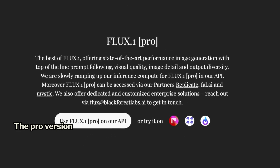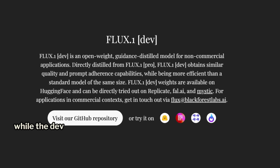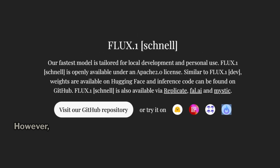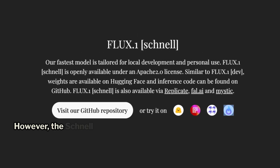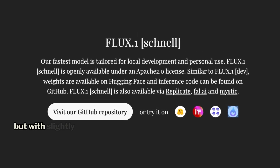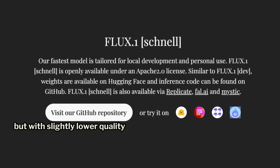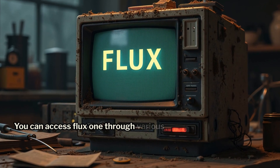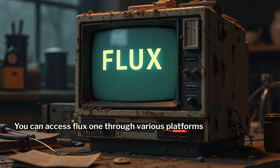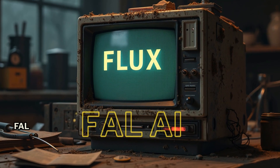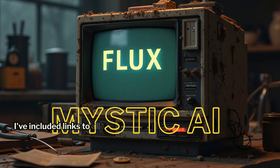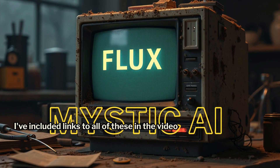The Pro version delivers the highest quality images, while the Dev version offers quality close to Pro. However, the Schnell version is much faster but with slightly lower quality than Dev. You can access Flux One through various platforms like Hugging Face, FAL, and Mystic AI. I've included links to all of these in the video description.